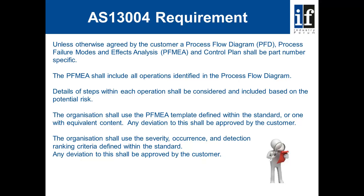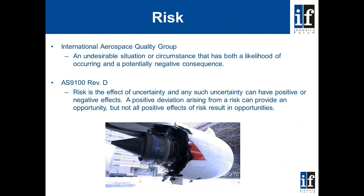The organization shall use the severity, occurrence and detection ranking criteria defined within the standard, and again, any deviation to this shall be approved by the customer. The standard provides ranking tables based on a one-to-ten score. This gives guidance when defining: the level of severity, which is the level of risk; occurrence, the frequency at which the risk may be experienced; and detection, the ability to identify the presence of the risk.